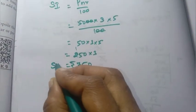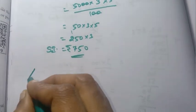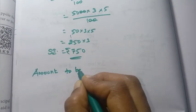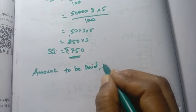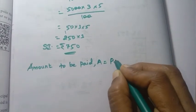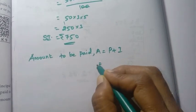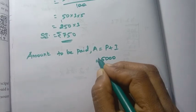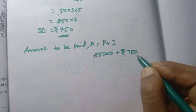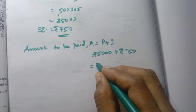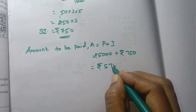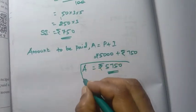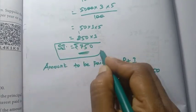So now, amount to be paid. Amount formula: A equal to P plus I. Amount equal to principal 5000 plus interest 750 equal to rupees 5750. This is the amount. So amount to be paid and interest are found out.